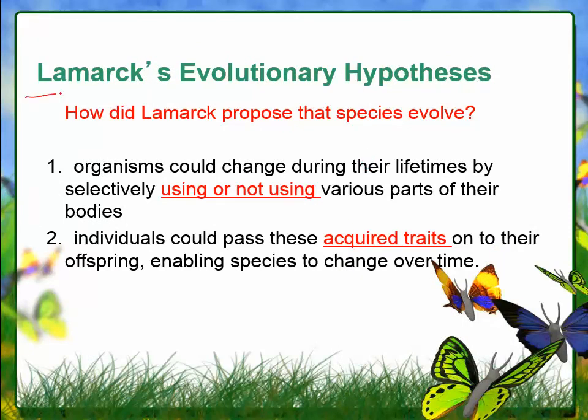Another scientist named Lamarck had a proposal for how species evolved. He said that organisms could change their body parts during their lifetimes — for instance, if you use your arms a lot you could make them stronger, bigger, or even longer, and if a bird did not use its wings, the wings would become smaller. The other part of Lamarck's theory was that if you did change your body parts, you could pass those changes on to your children.